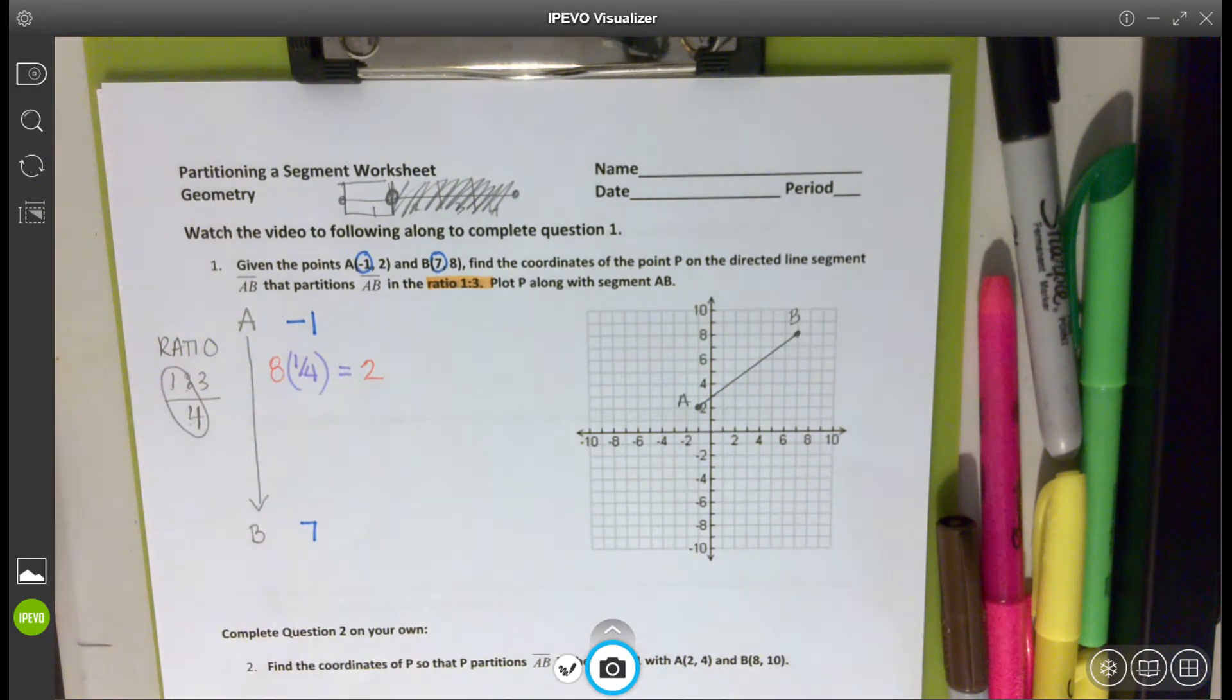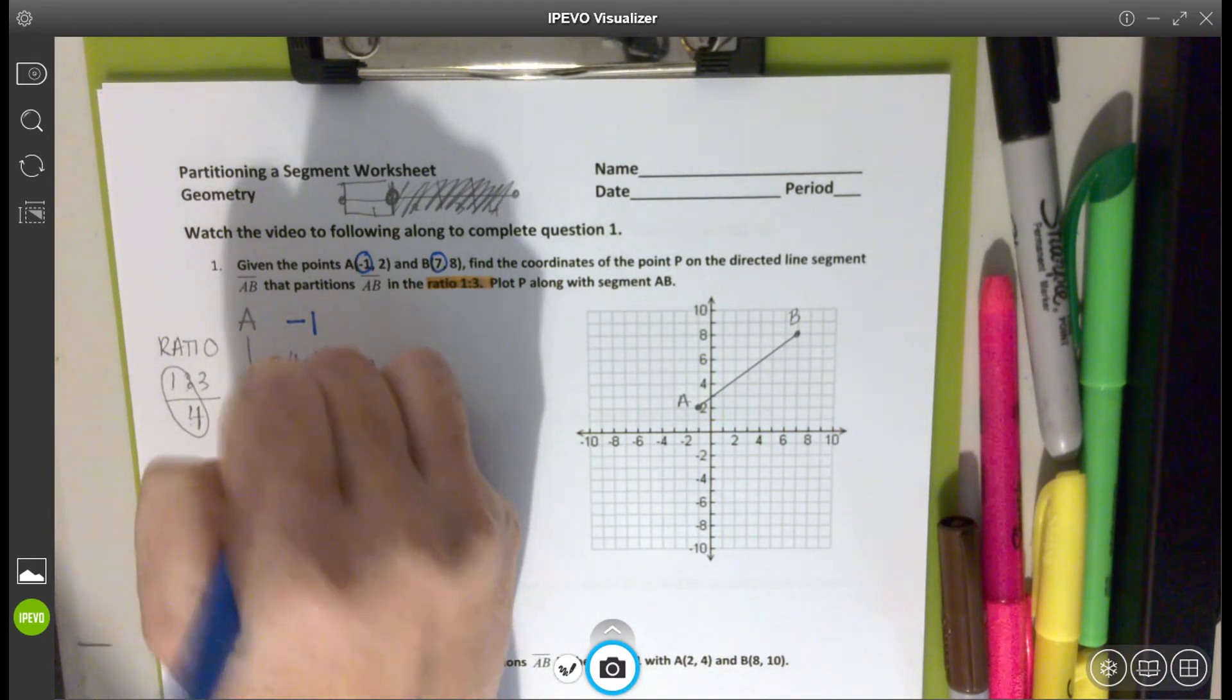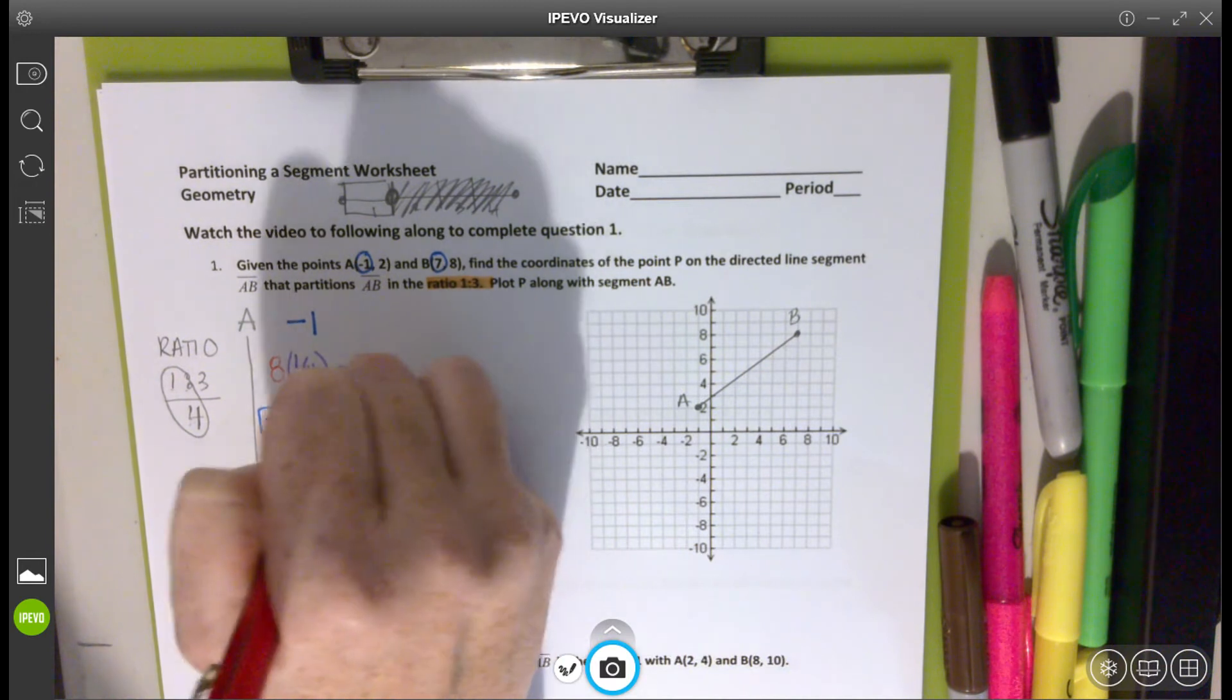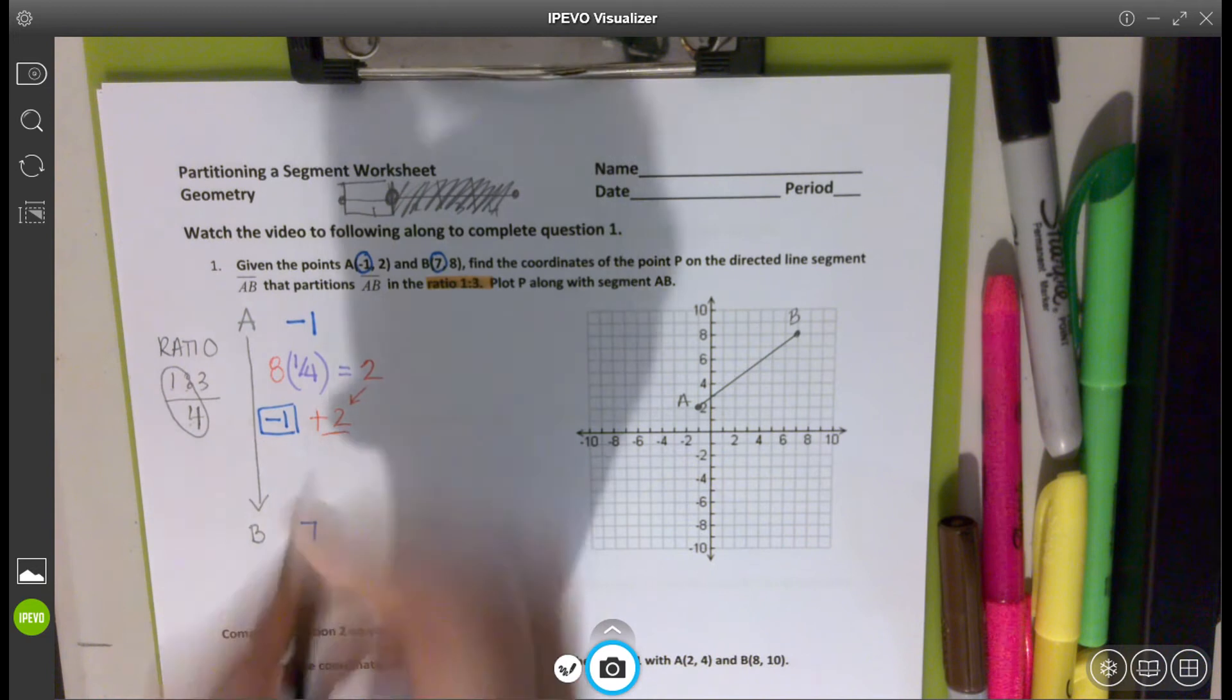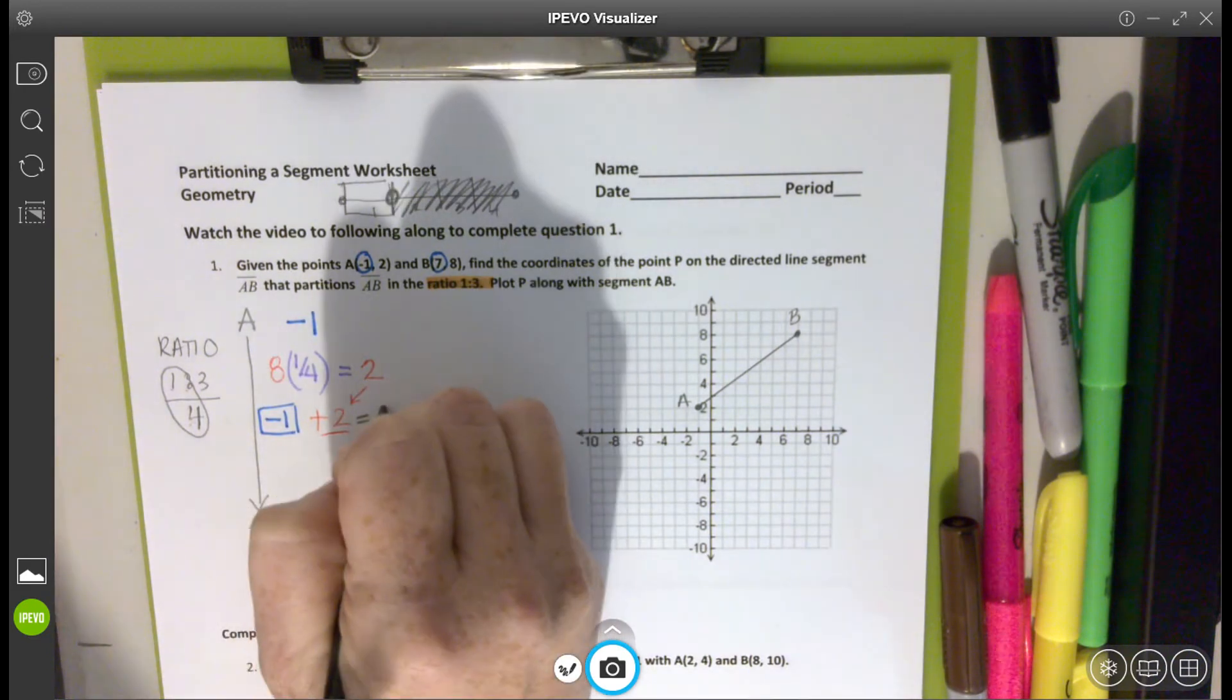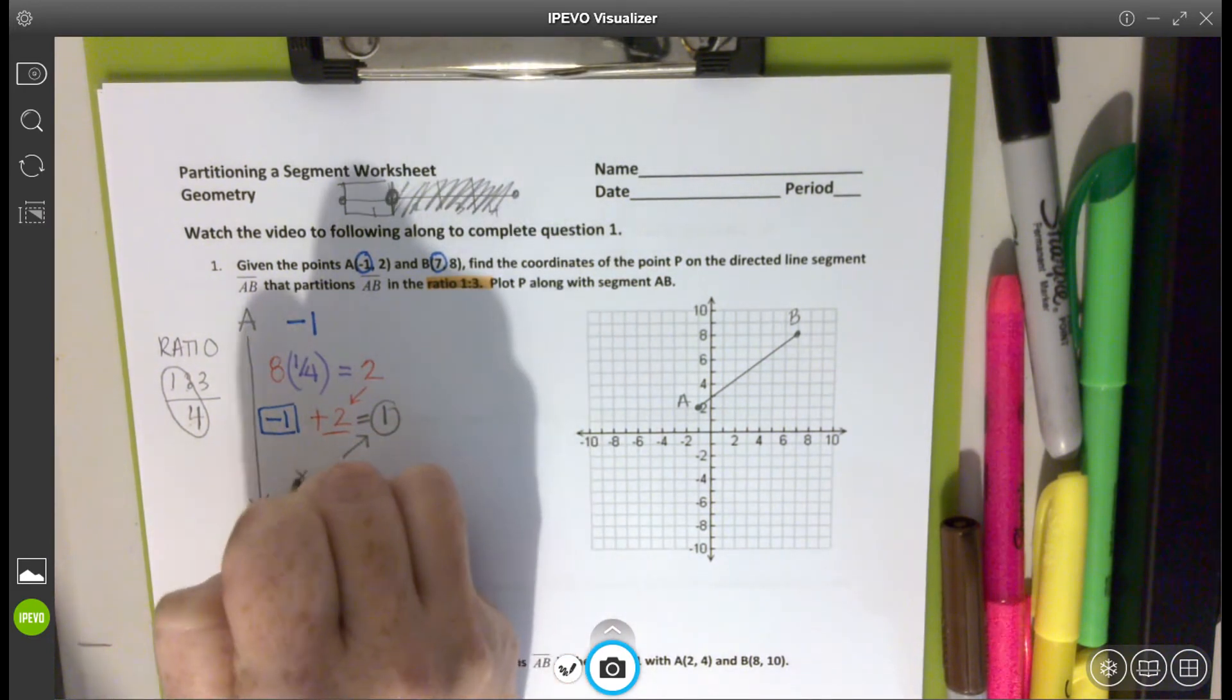So that tells me how many units I'm going to be traveling from my original location. I started at negative one and I am going to add two. That's our value that we found. And that's going to tell me my new point for my X coordinate. So negative one plus two is positive one. That's our X coordinate.